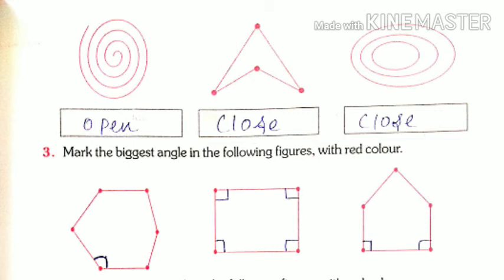Now let us see question number 3. The figures are given in red color, so I have used red color here. You may use any color or pencil for marking in your workbook. The question asks us to mark the biggest angle in the figure with red color. The first figure has six sides: 1, 2, 3, 4, 5, and 6. This is a hexagon figure. At each red point, two lines meet, and where two lines meet, an angle is formed.